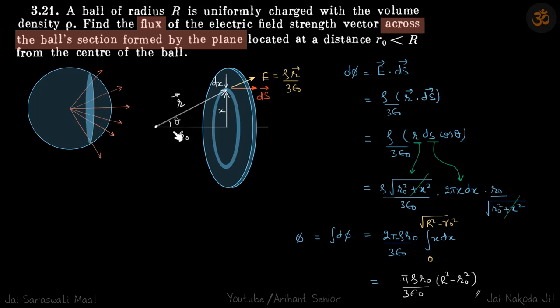Now this angle is theta so between r vector and ds vector also the angle is theta. So this becomes r ds cos theta.